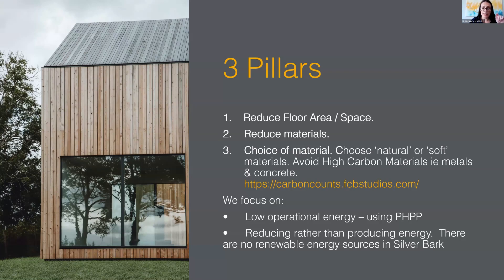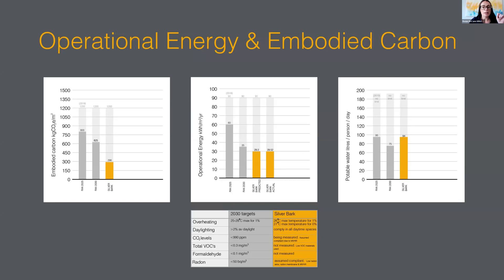As passive house designers, we have a focus on a fabric-first approach, achieving low operational energy using PHPP calculations. We focus on reducing energy rather than producing energy, as renewables also have embodied carbon. The embodied carbon in Silverbark was 292 kg CO2 per metre squared, compared to the RIAI 2030 target of 625 — over 50% below target. The predicted operational energy was 29.2 kWh/m² per year and actual measured was 29.52, very close. The 2030 target is 35.